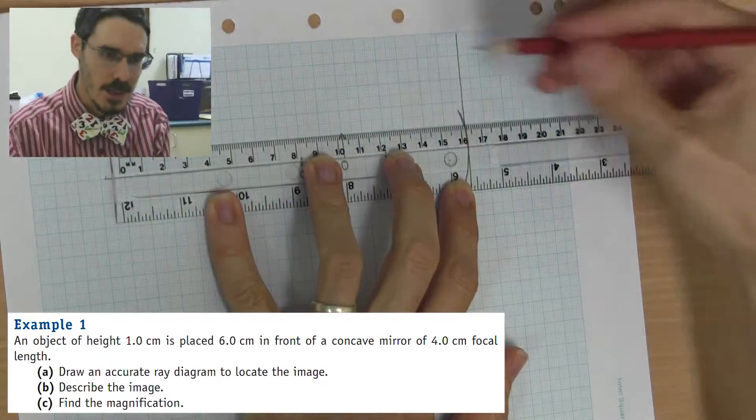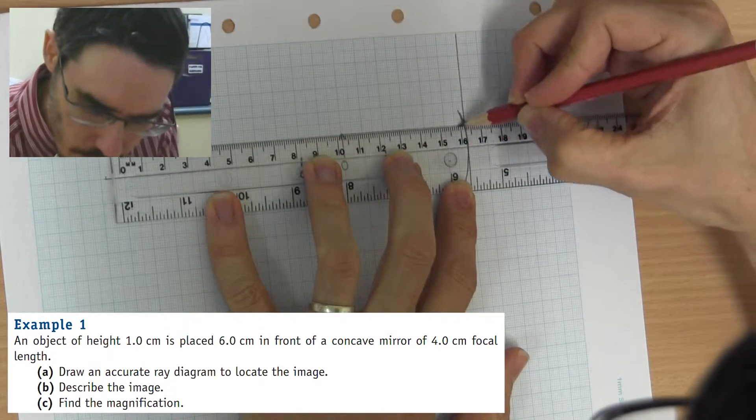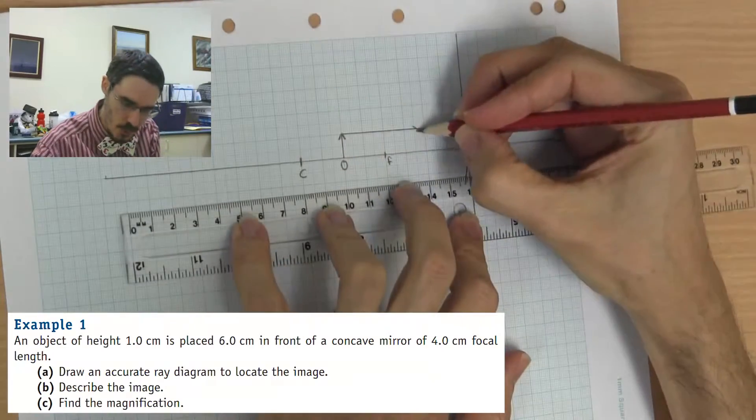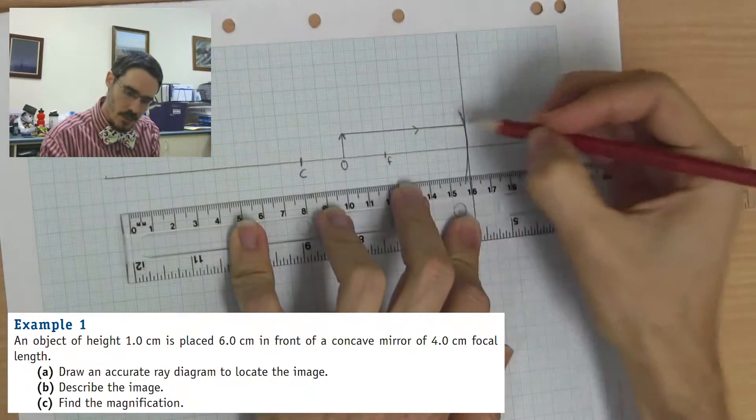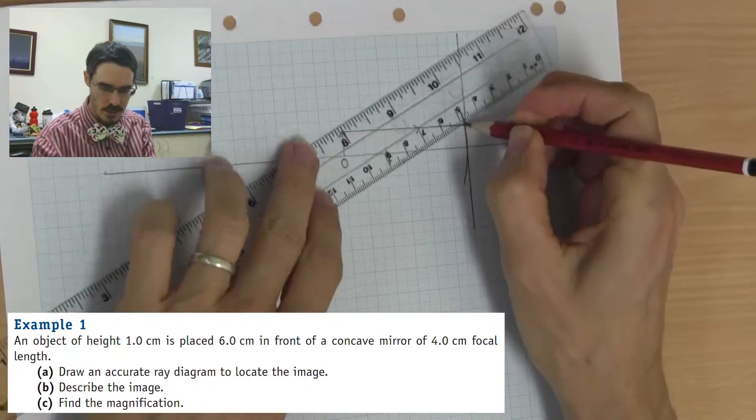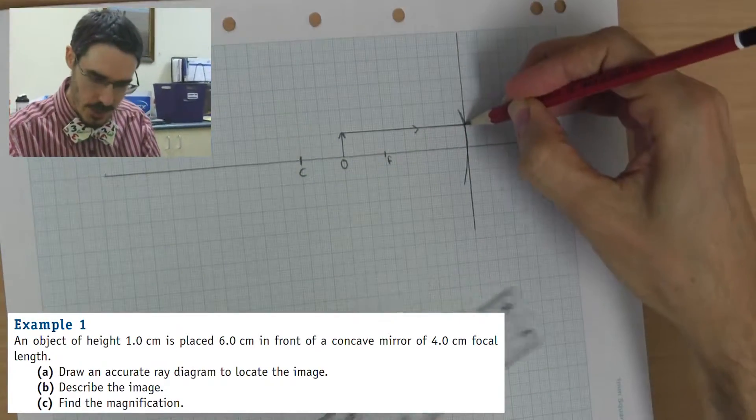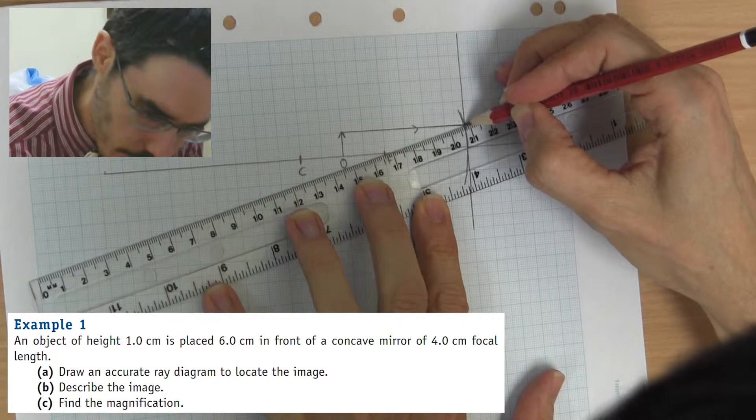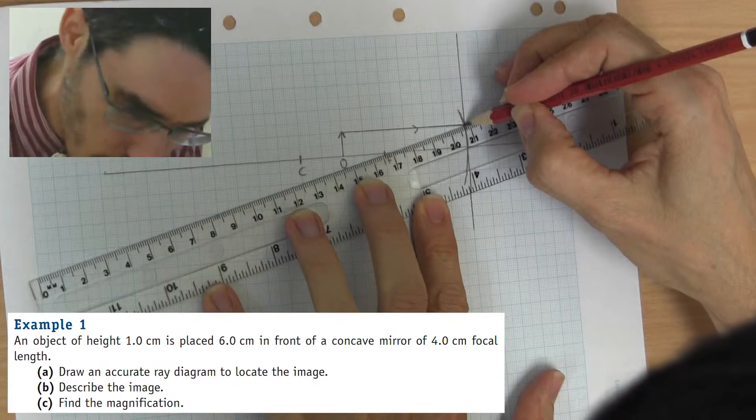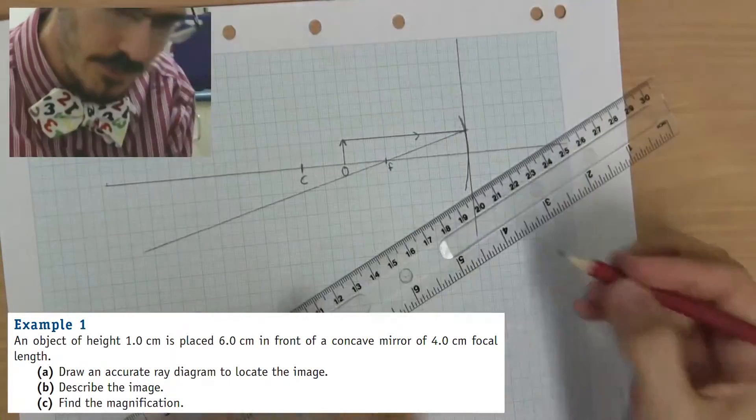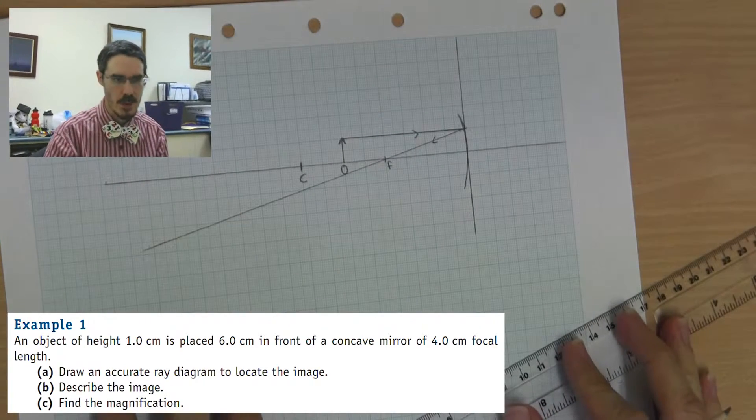The first ray is a ray parallel to the principal axis. Oops, didn't quite get it right. I can use a sharp pencil, it would be accurate with the drawing. A ray parallel to the principal axis is going to reflect from the line, and it's going to reflect through the focus. So, it's going to go like that. There's my first ray.